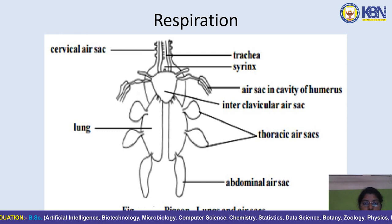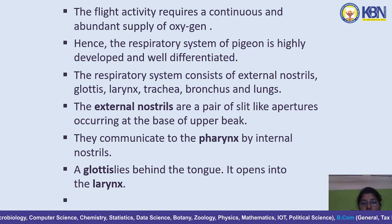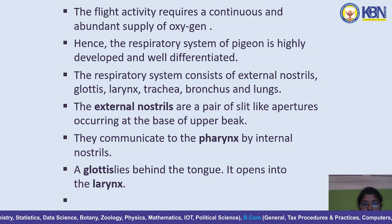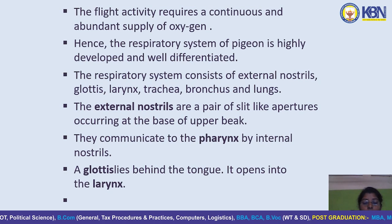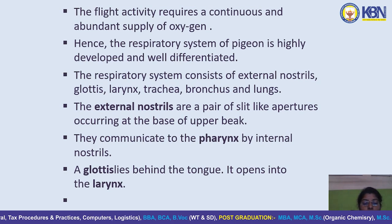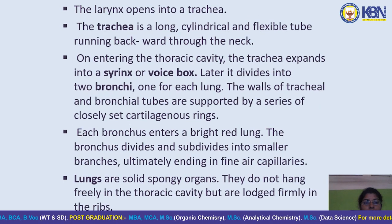Flight activity requires a continuous and abundant supply of oxygen, hence the respiratory system of birds is highly developed. It consists of external nostrils, glottis, larynx, trachea, bronchi, and lungs. The external nostrils are a pair of slit-like apertures at the base of the upper beak, communicating to the pharynx by internal nostrils. The glottis lies behind the tongue and opens into the larynx, which opens into the trachea.